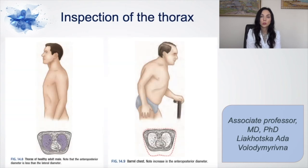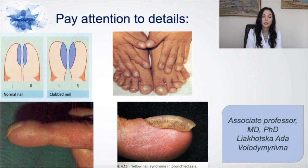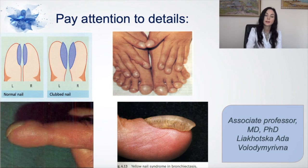Inspection of the thorax can be static and dynamic. For static inspection, you should look at the constitutional types and the shape of the chest — the patient may have some pathological chest shape. You should pay attention to the gait and how the patient feels. Also pay attention to the fingers and nails: if the patient has clubbed nails or maybe yellow nail syndrome during bronchiectasis. If a patient has had chronic obstructive pulmonary disease for a long time, you could see these changes in the fingers and nails.